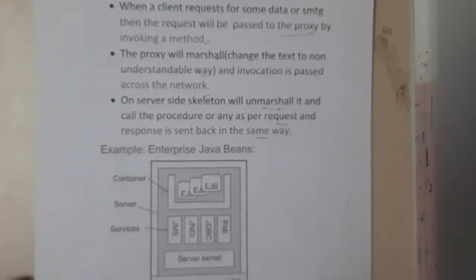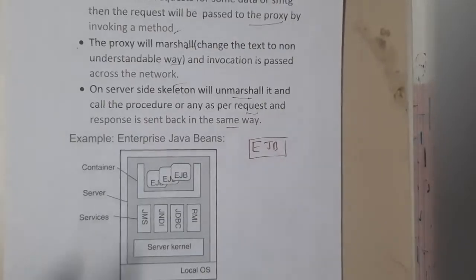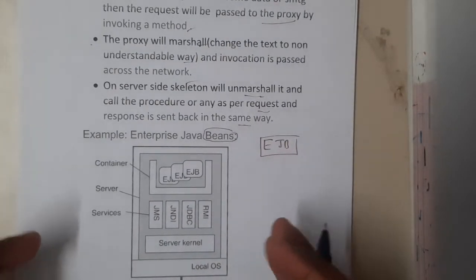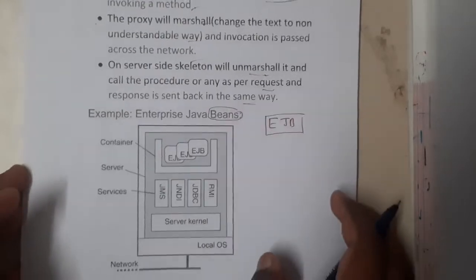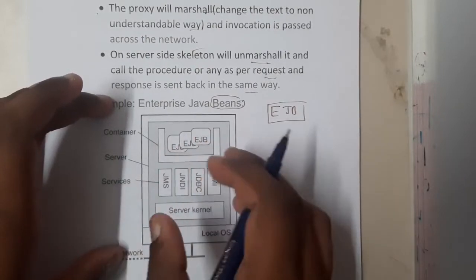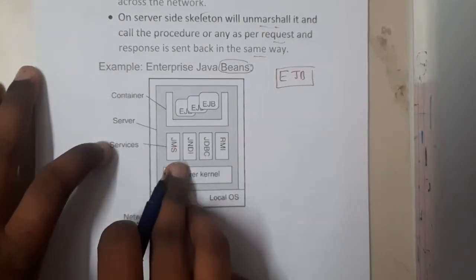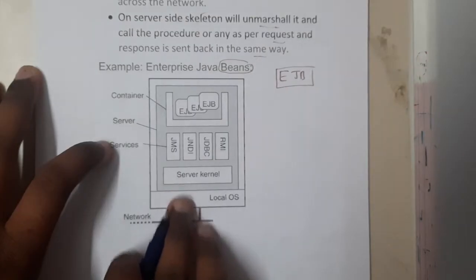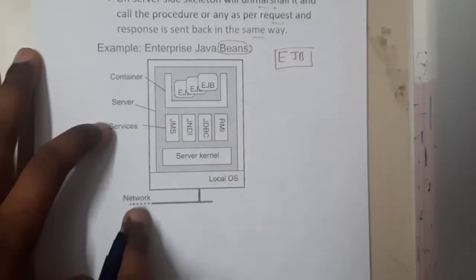The next architecture is based on Java — EJB, Enterprise Java Beans. Beans is one of the most common packages used in Java to achieve this distributed object system. The diagram shows a container inside which you have multiple EJBs. These provide services like JMS, JNDI, JDBC, and RMI — remote method invocation, Java database access, Java naming, and messaging. This whole thing sits inside your server with the server kernel and local OS, connected through the network.